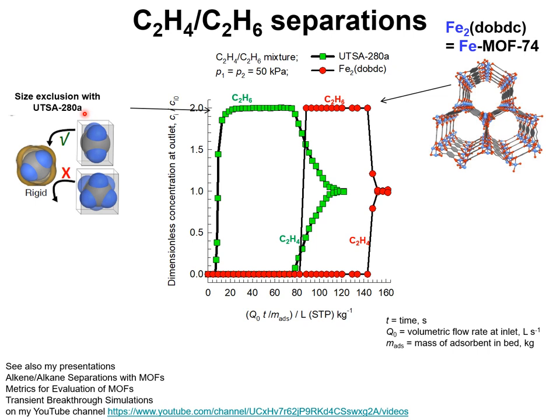With UTSA-280, where ethane is practically excluded from the pores due to size exclusion, the breakthrough of ethane occurs practically near the start of the breakthrough run. On the other hand, with iron MOF-74, the uptakes of both components are significantly high, and the breakthrough of the saturated ethane occurs at a much later time than with UTSA-280. These have important consequences for any PSA scheme used in practice.